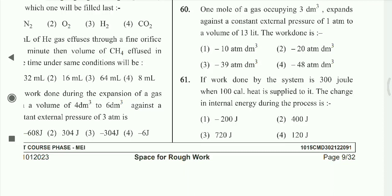Question 61: If work done by the system is 300 joules and 100 calories of heat is supplied to it, the change in internal energy during the process is delta U = 120 joules.